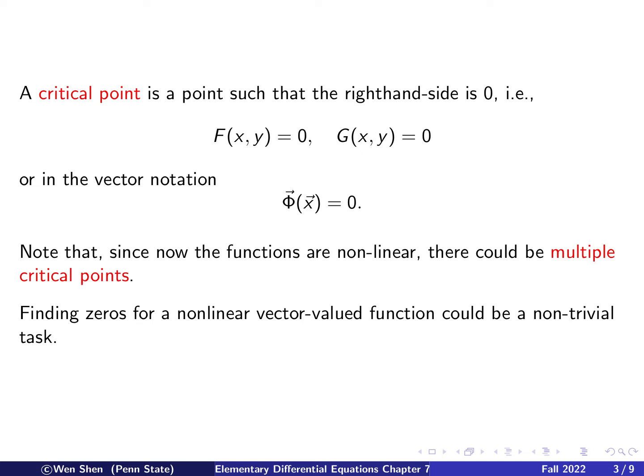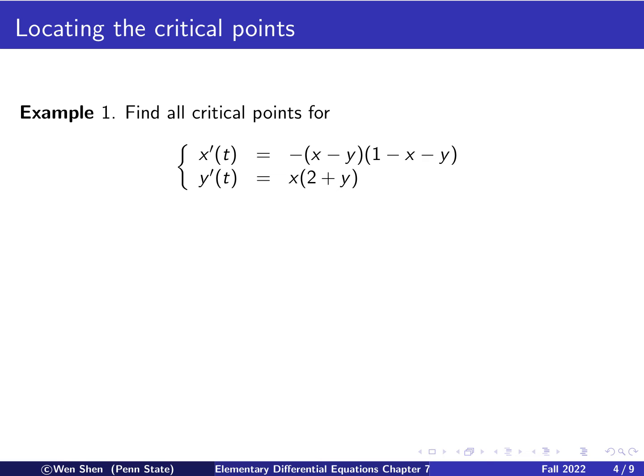We may have learned the method of Newton iteration for a single nonlinear equation, which provides an algorithm to find zeros. Here we have a two-by-two system, so finding zeros for a system of two nonlinear equations might not be a trivial task — it could get quite complicated. Let's take some examples of locating critical points, examples that are not too complicated so we can find the exact critical points.